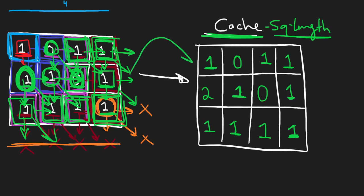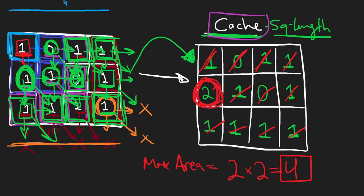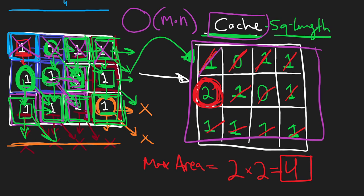Now we've transformed the matrix into a new cache that tells us, for each position, what's the max square length we can make with that cell as the top-left corner. We iterate through each position — checking one, zero, one, one, one, two, one, zero, one, one, one, one, one — the biggest is two. So the max area is two times two, which is four. And because we're using a cache and not repeating work, the time complexity is M times N — we're really just scanning through each position in the matrix.